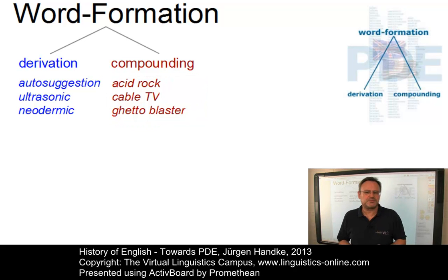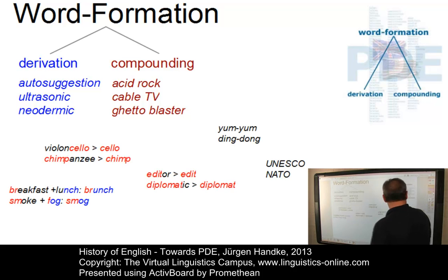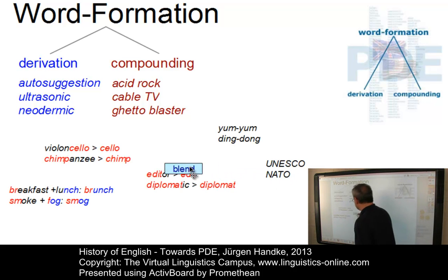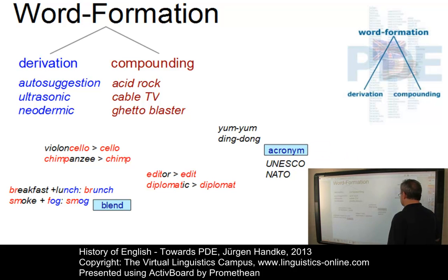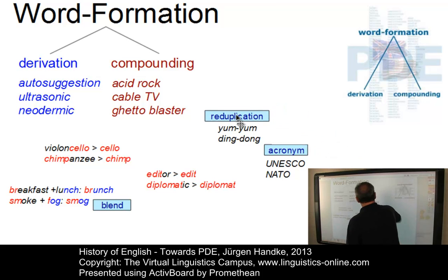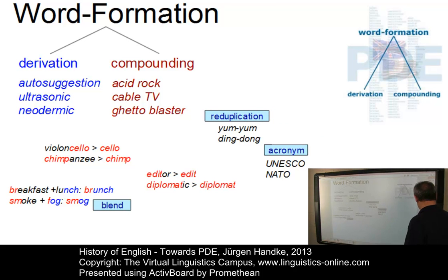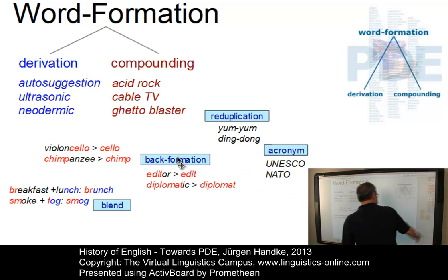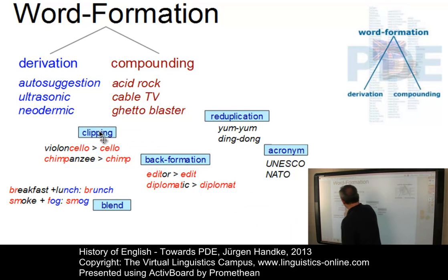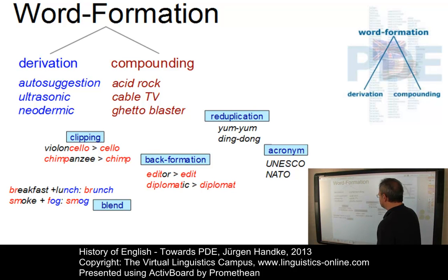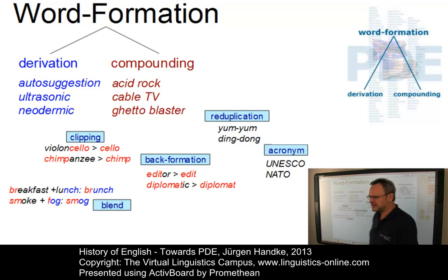Further word formation processes involve, among others, blends such as brunch — from breakfast and lunch; acronyms such as UNESCO and NATO; reduplications such as yum-yum or ding-dong; back-formations such as editor becoming edit and diplomatic becoming diplomat; and clippings where parts of words are cut off — violoncello becomes cello and chimpanzee becomes chimp.